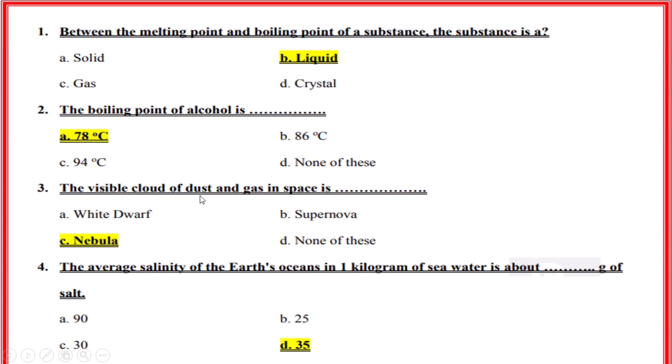The visible cloud of dust and gas in space is? Correct option: C, Nebula. The average salinity of the Earth's ocean in one kilogram of sea water is about how many kilograms of salt? Correct option: D, 35 grams.